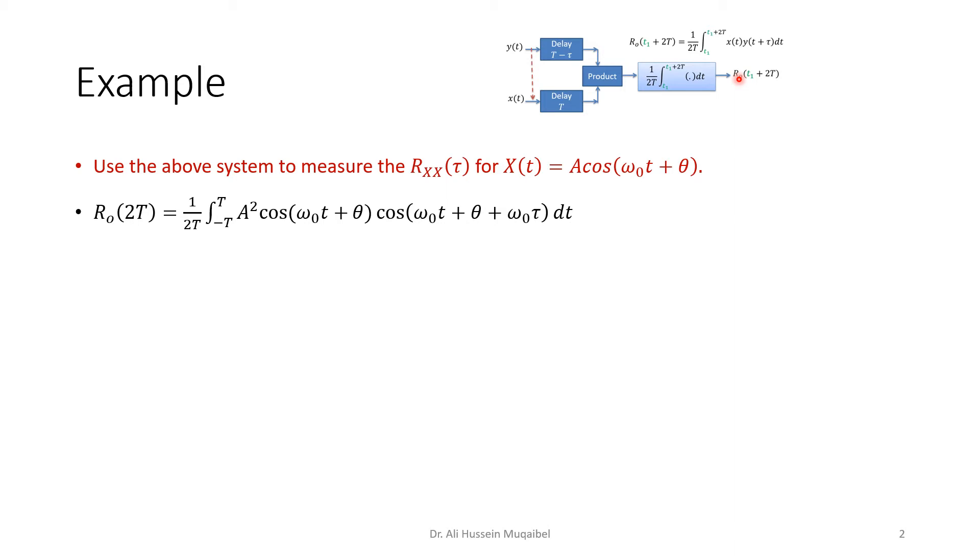So basically, if you go through the block, the output at 2T, like we have seen in the previous slide, equals the integral of the incoming signal, A*cosine, times a shifted version, A*cos(ω₀t + θ + ω₀τ). So A times A gives you A².